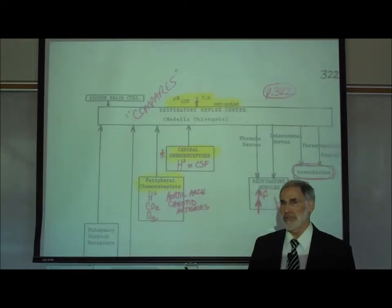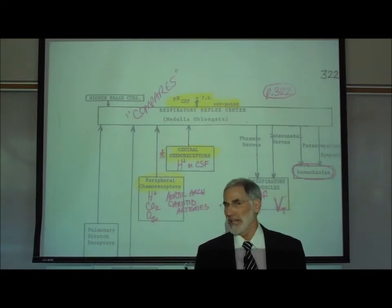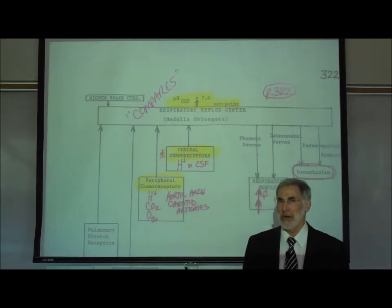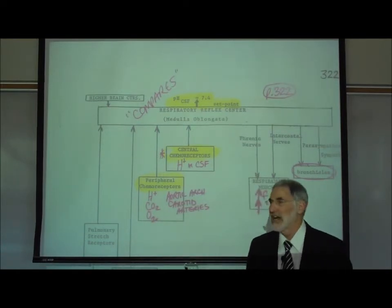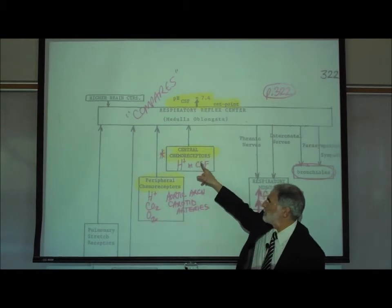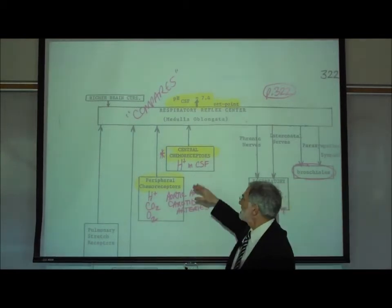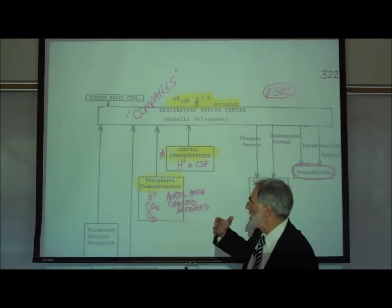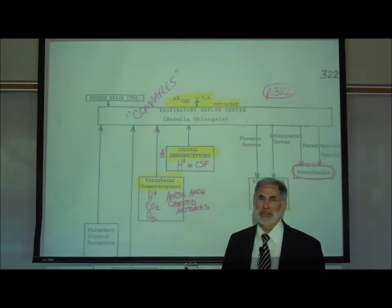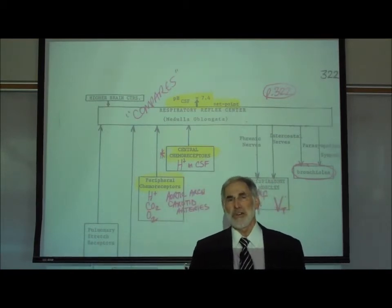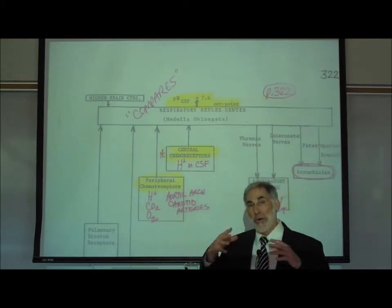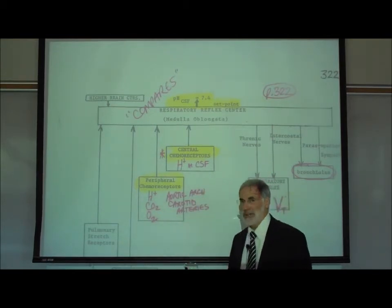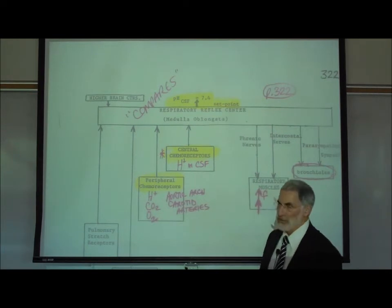Since the main function of the respiratory reflex center is to regulate the pH of the cerebrospinal fluid, the most important sensory information it requires comes from the central chemoreceptors. These are sensitive to the hydrogen ion level in the cerebrospinal fluid. They're called central because they are located in the central nervous system, around the brain, monitoring the acidity of the cerebrospinal fluid.